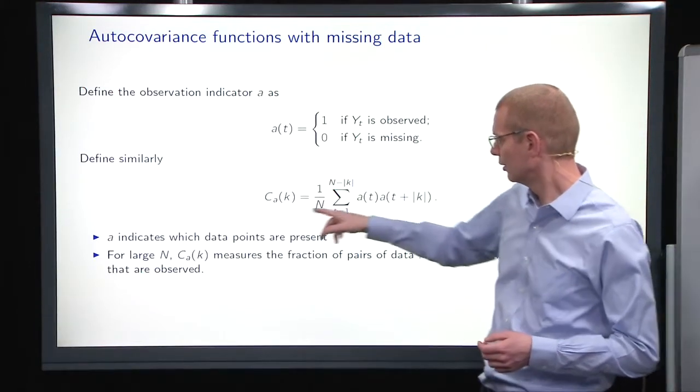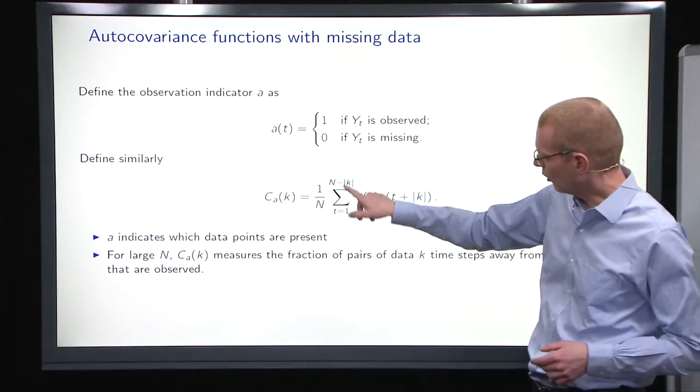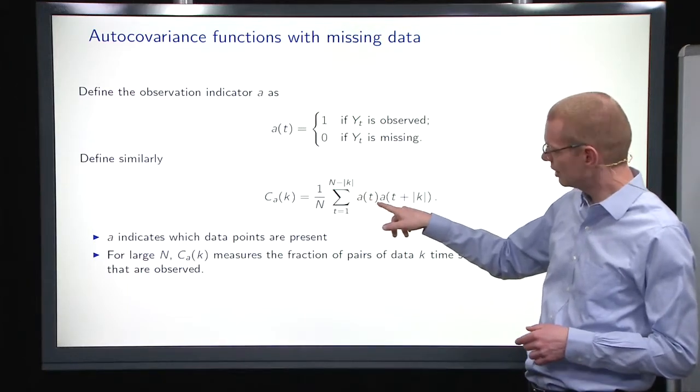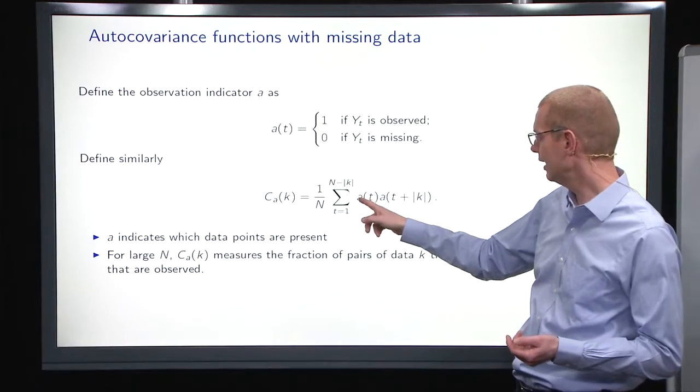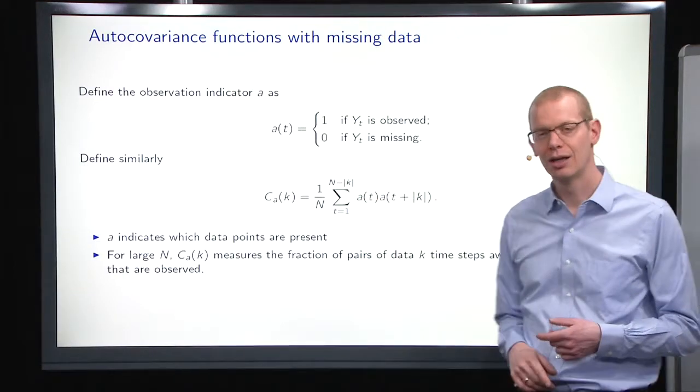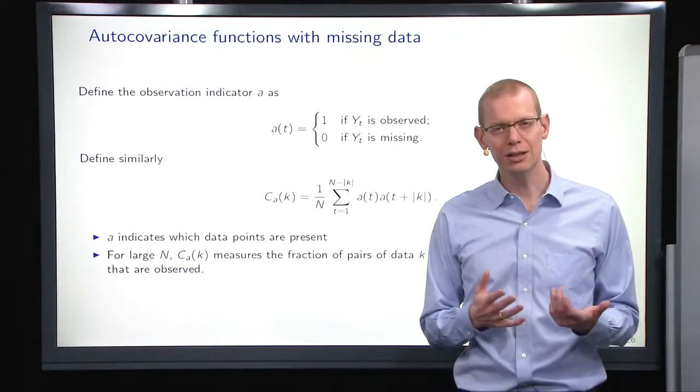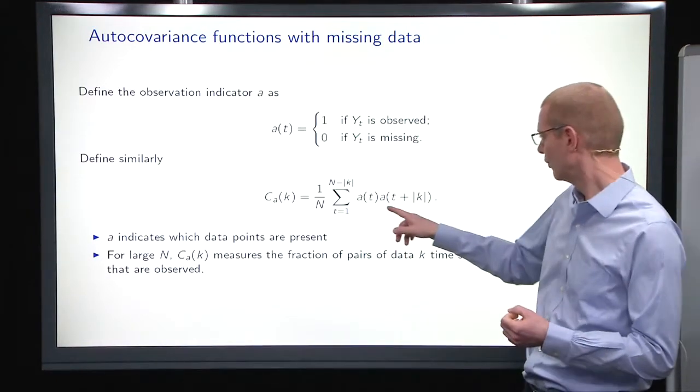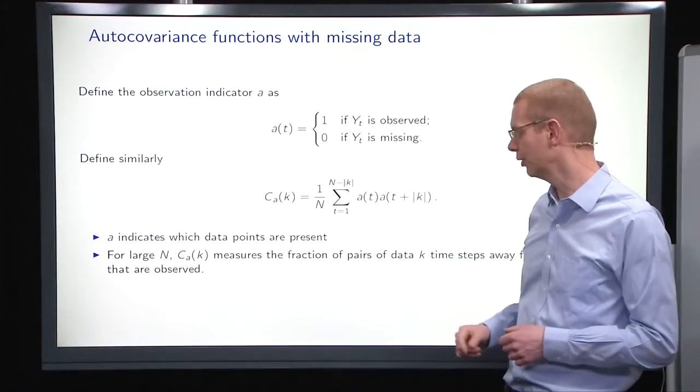And then we will define C_a(k) that is the sum of all the possible combinations of a at time t and t plus k. So what does that reflect? Well, a at time t times t plus k, or the absolute value of k, what does that mean? Well, the product here is 0 if one of them is missing and 1 if they are both observed.